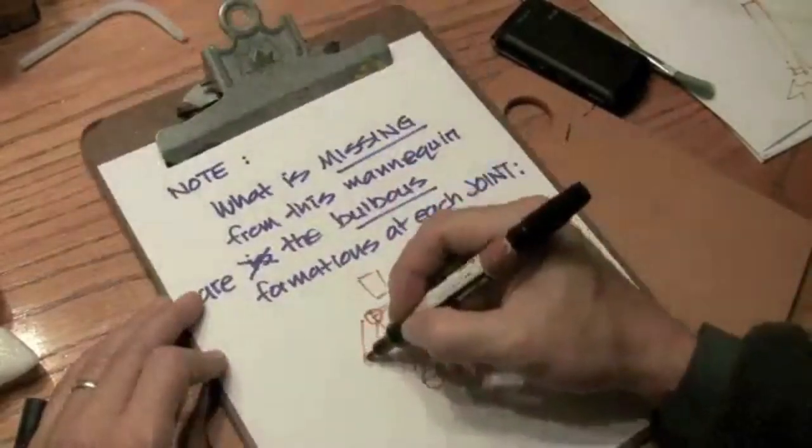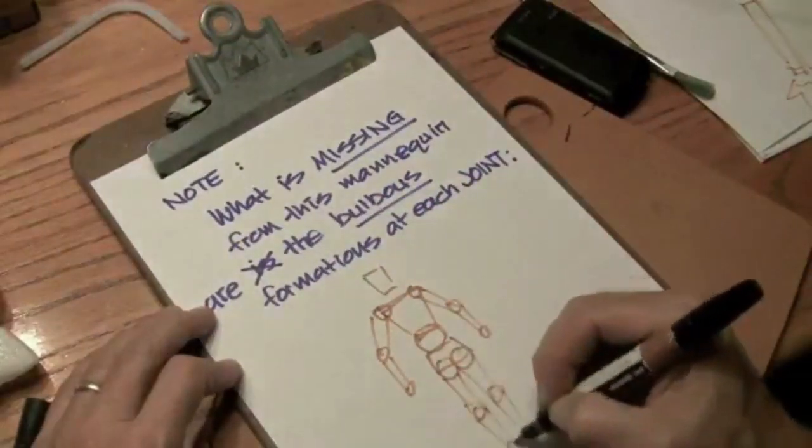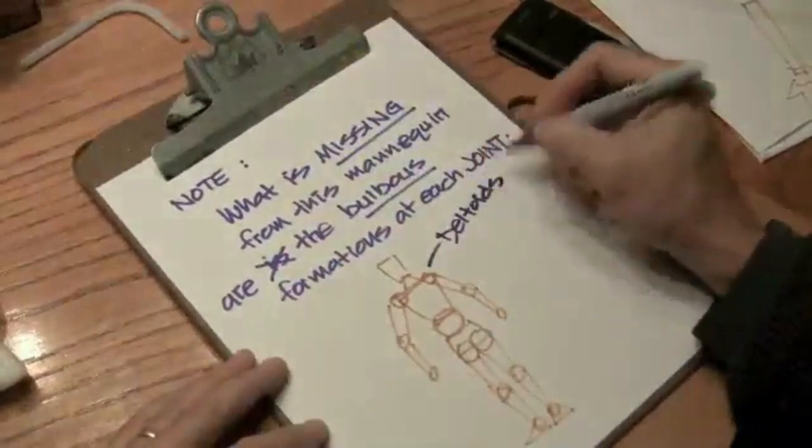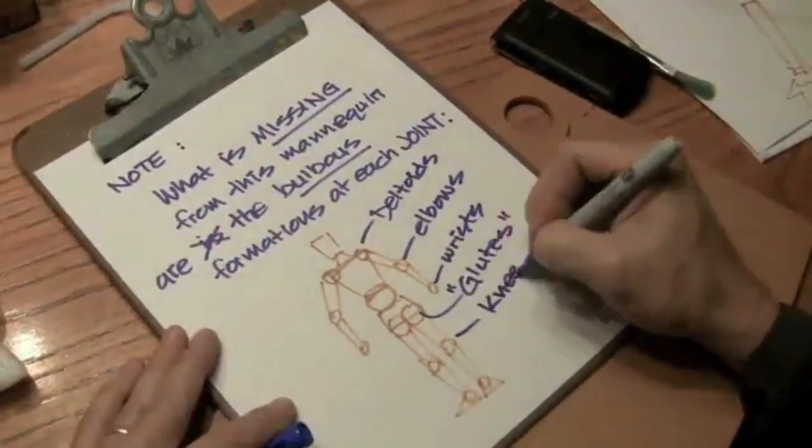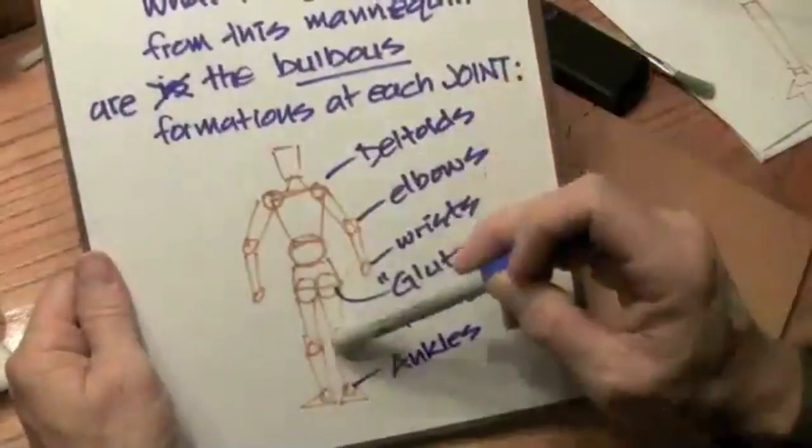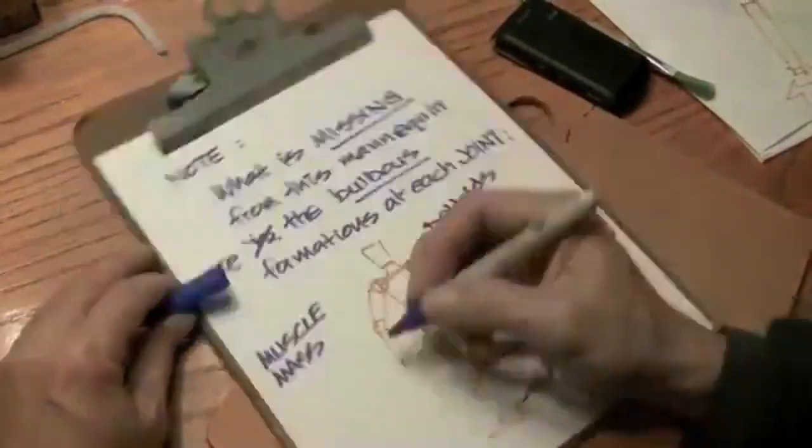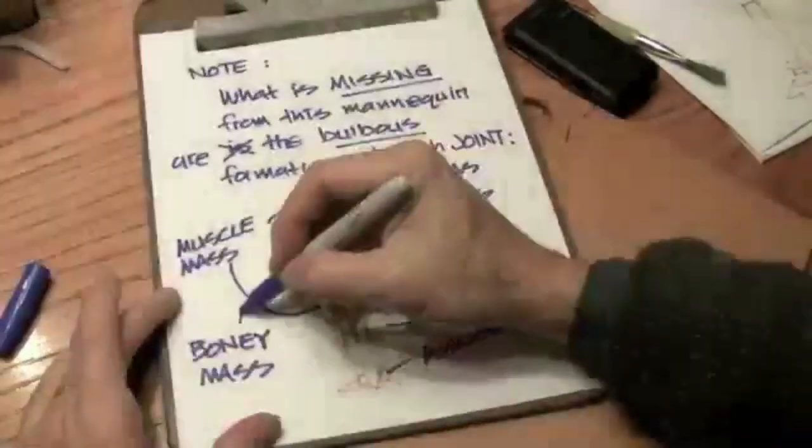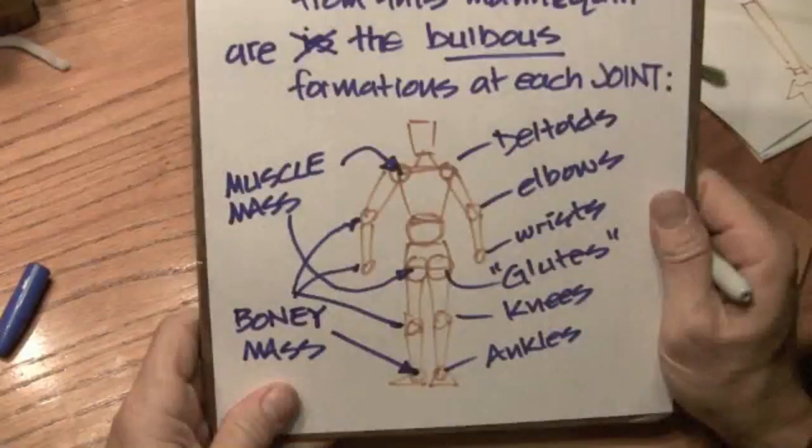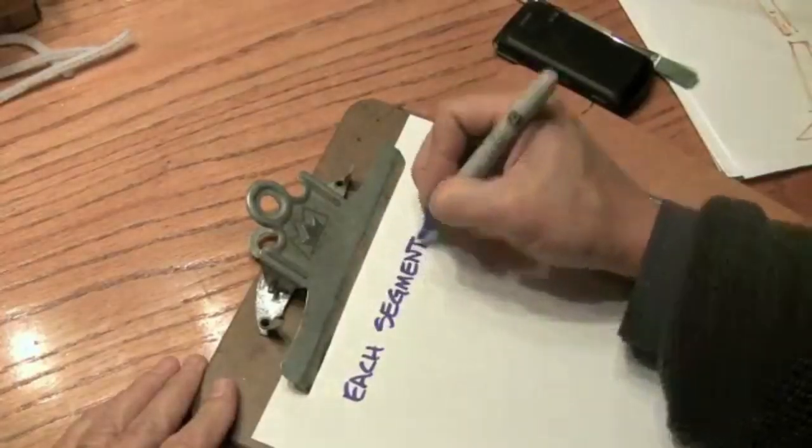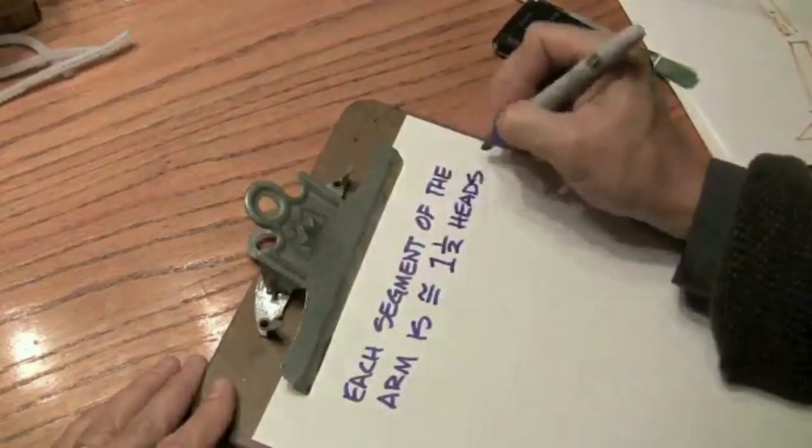Let me talk about those briefly. At the shoulders and hips, the bulbous formations are formed by muscle mass. At the wrists, elbows, knees, and ankles, the bulbous formations are created by bony masses. Got that? There it is. So that is not included in this mannequin, so you have to know that and add it yourself.